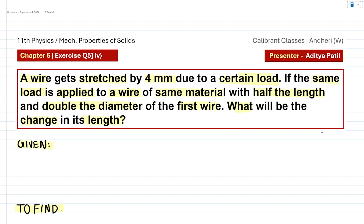Now let's understand what is given to us in the question. The first quantity given is the stretching or the change in length for wire 1. We mark it as delta L1, and that is said to be 4 millimeters. Let's convert that into SI units, so 4 millimeters can be written as 4 into 10 raised to minus 3 meters.